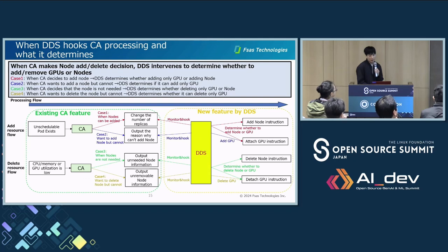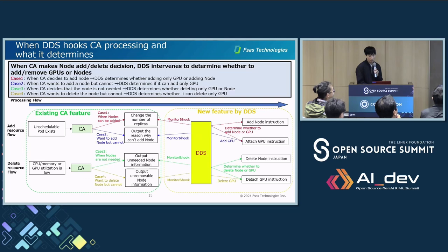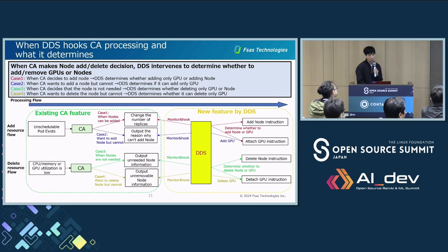Case one: when CA decides to add a node, DDS determines whether to add only GPU or add a node. Case two: when CA wants to add a node but cannot for some reason — in this case, DDS determines if it can add only GPU. Case three: when CA decides that a node is not needed — DDS determines whether to delete only GPU or the node. Case four: when CA wants to delete a node but cannot for some reason — DDS determines whether it can delete only GPU.